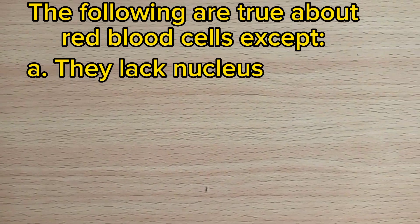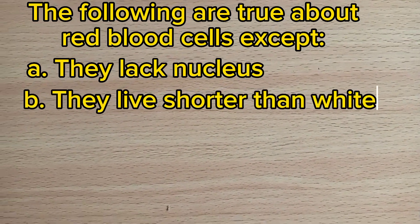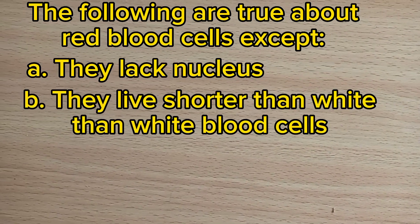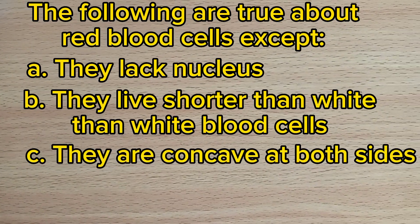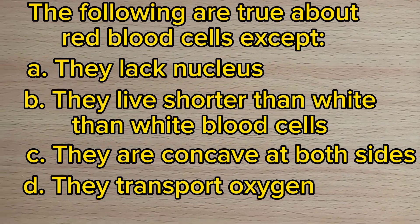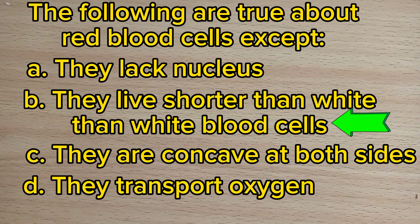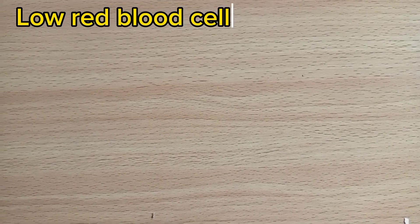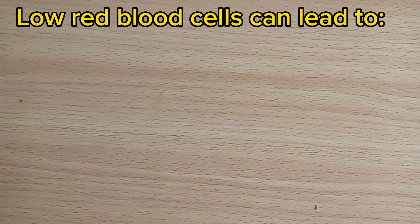A. They lack nucleus, B. They live shorter than white blood cells, C. They are concave at both sides, D. They transport oxygen. The answer is B, they live shorter than white blood cells.